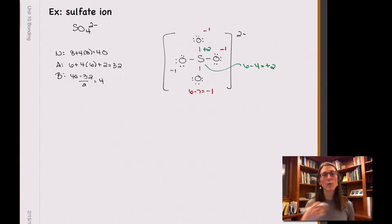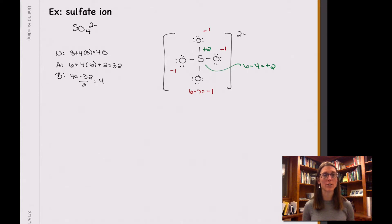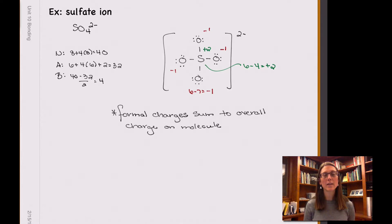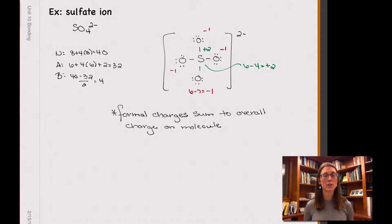You'll notice with formal charges that the formal charges on all of the different atoms within your molecule need to add up to the overall charge on the entire molecule. So it turns out that while this is one valid Lewis structure, if we start looking at possible exceptions to the octet rule, there are other ways that we can draw this Lewis structure.